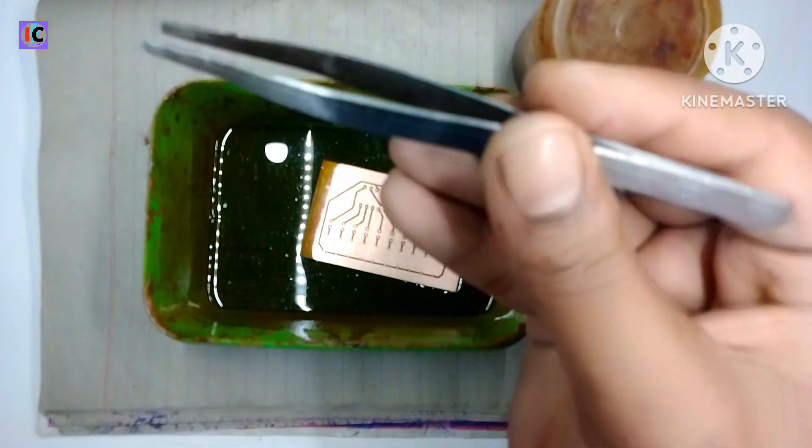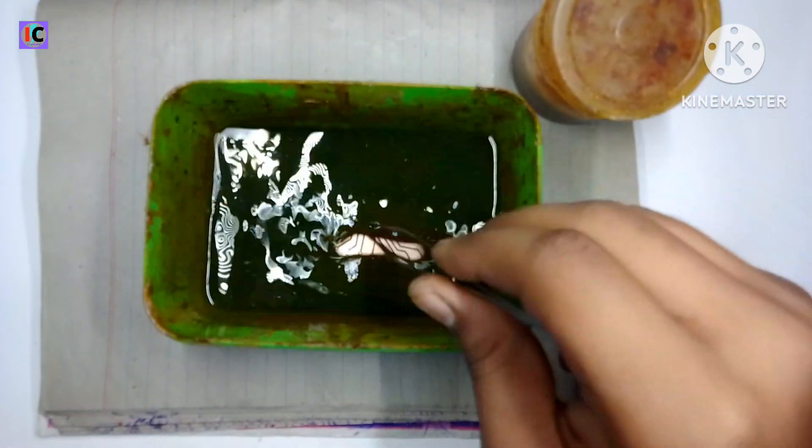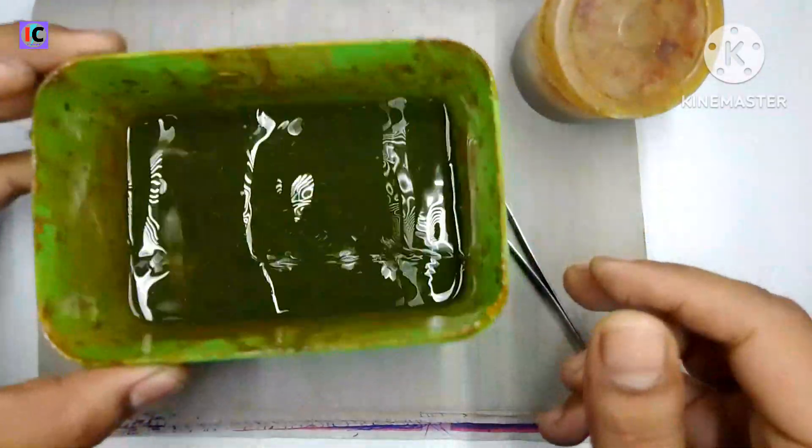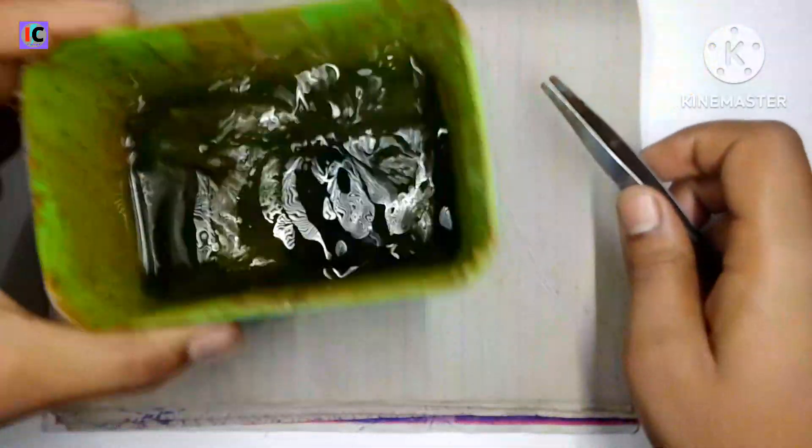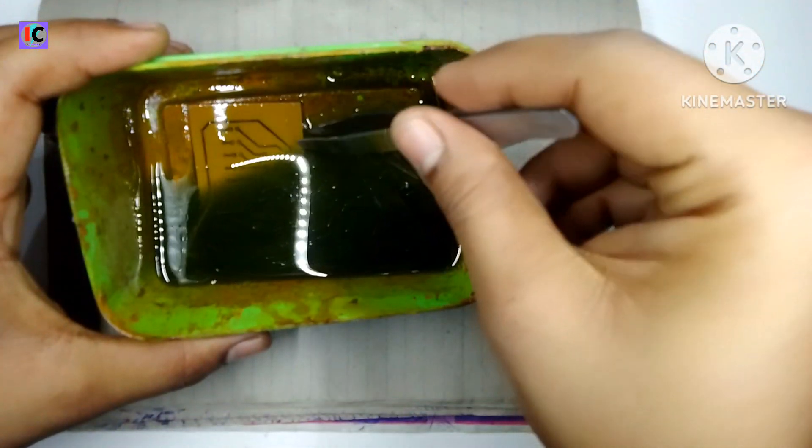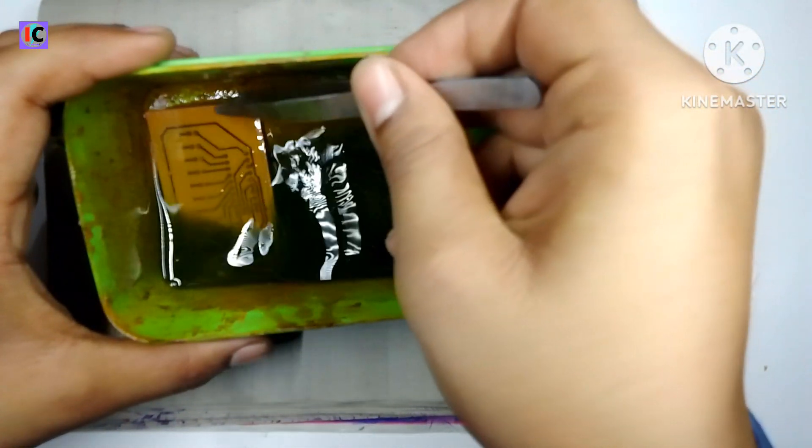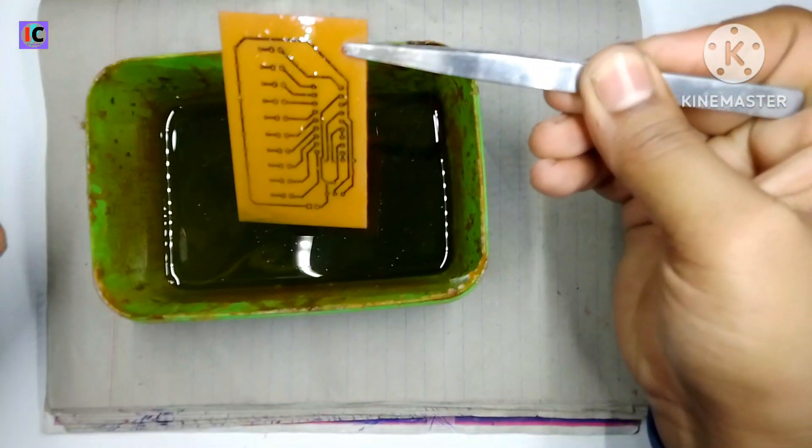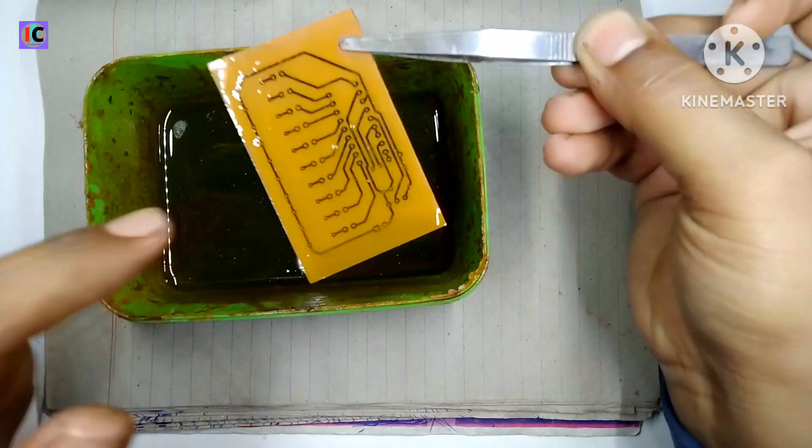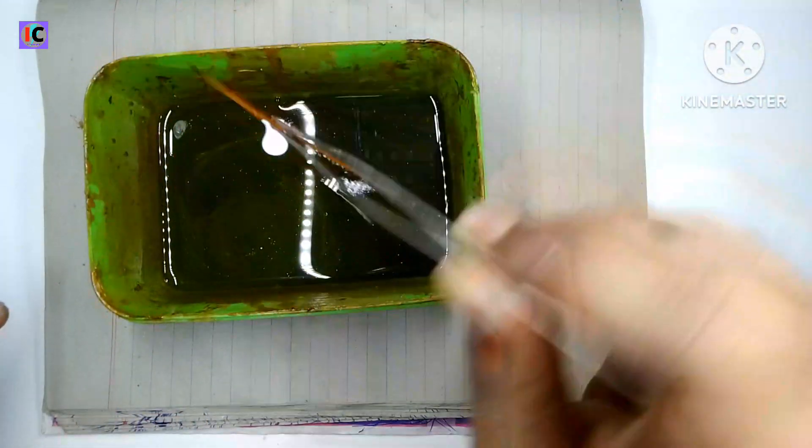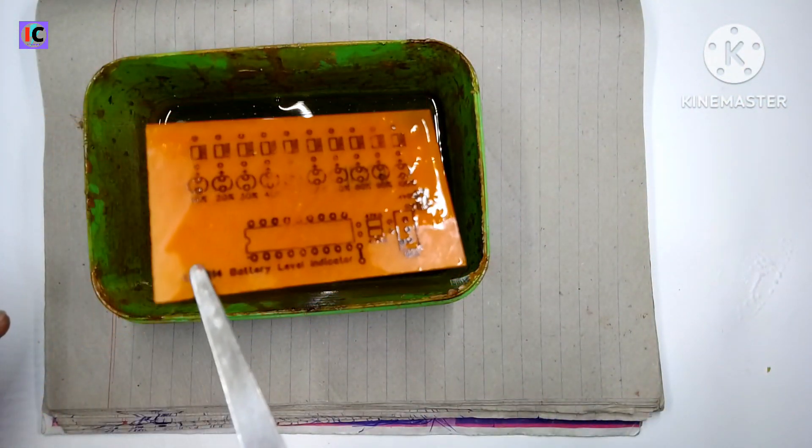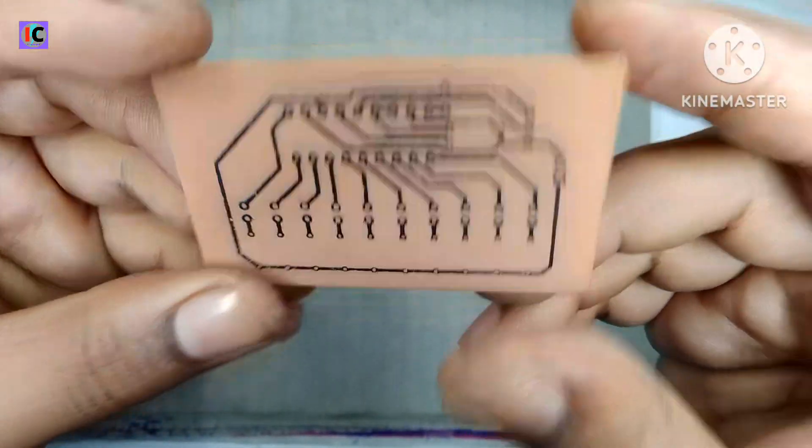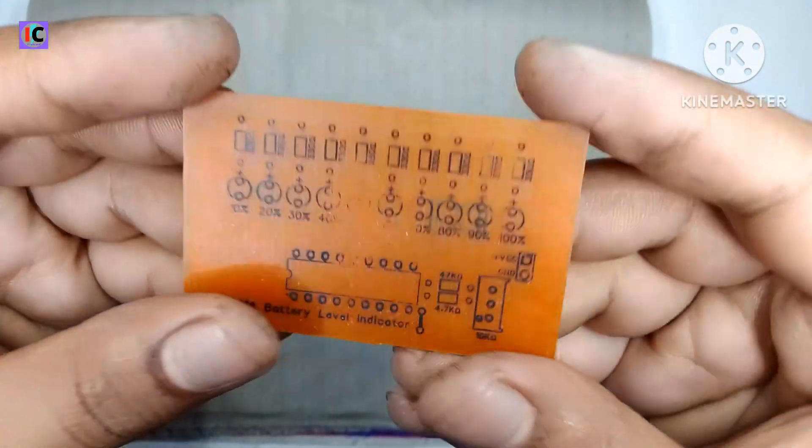Now after doing all this, dip the whole PCB into the solution of ferric chloride so that we can etch it. After doing almost 10 to 15 minutes of etching, the PCB will be ready. Before using this, wash the whole PCB with water, and now you can see the PCB is very clean.